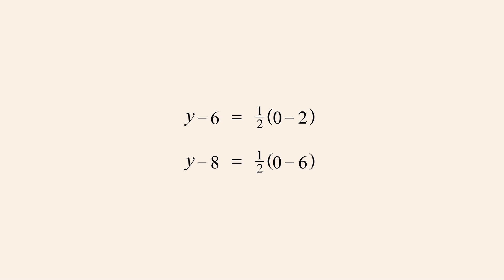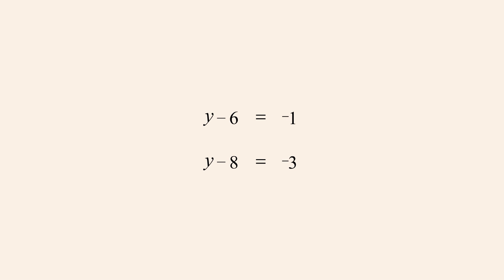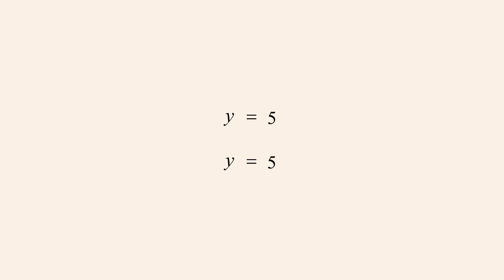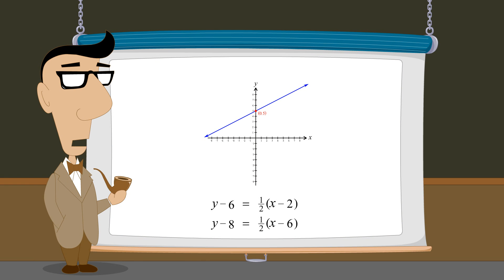To solve the equations for y, we first eliminate the zeros and complete the arithmetic: multiplying one-half times negative two to get negative one, and one-half times negative six to get negative three. We then add six to both sides of the first equation and eight to both sides of the second equation, allowing us to cancel the negative and positive sixes and the negative and positive eights. Completing the arithmetic, negative one plus six is five and negative three plus eight is also five. So for both equations, when x is zero, y is five. Therefore, both equations have the same y-intercept, and since the equations have the same slope and y-intercept, they both describe the same line.